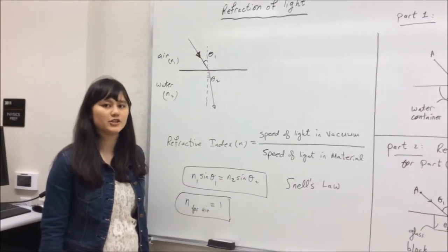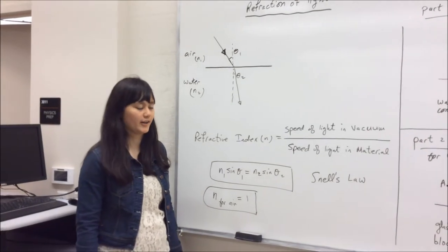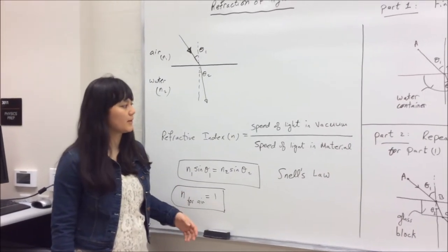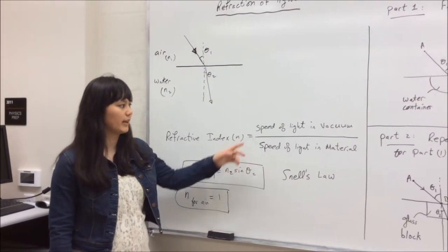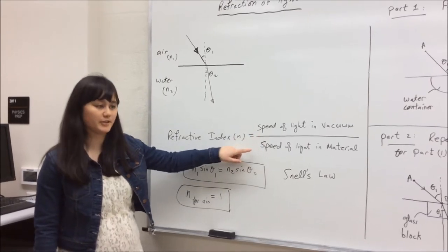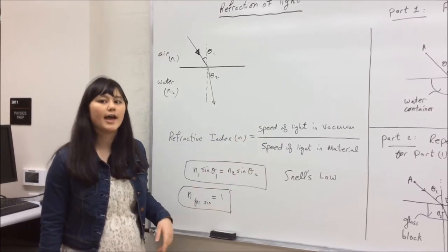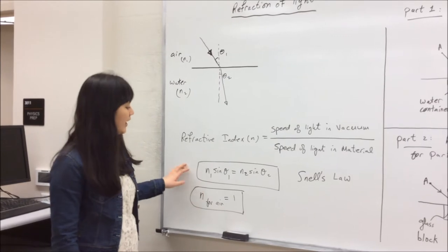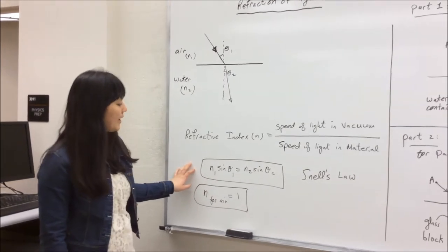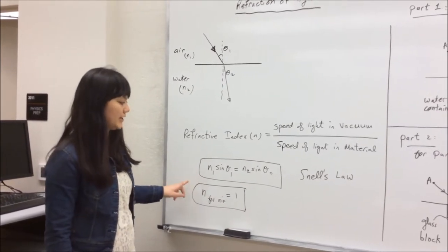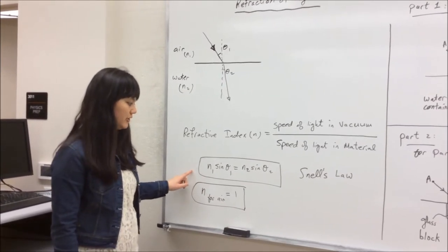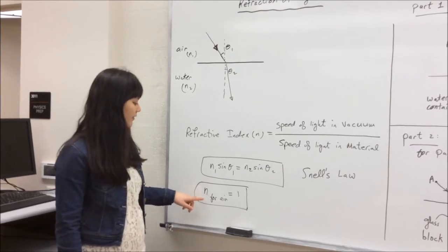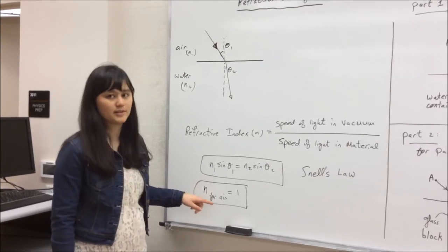The refractive index N compares the speed of light in a vacuum to the speed of light in the material. We can also look at Snell's law, which states that N1 sin θ1 is equal to N2 sin θ2. We also know that N for air is equal to 1.